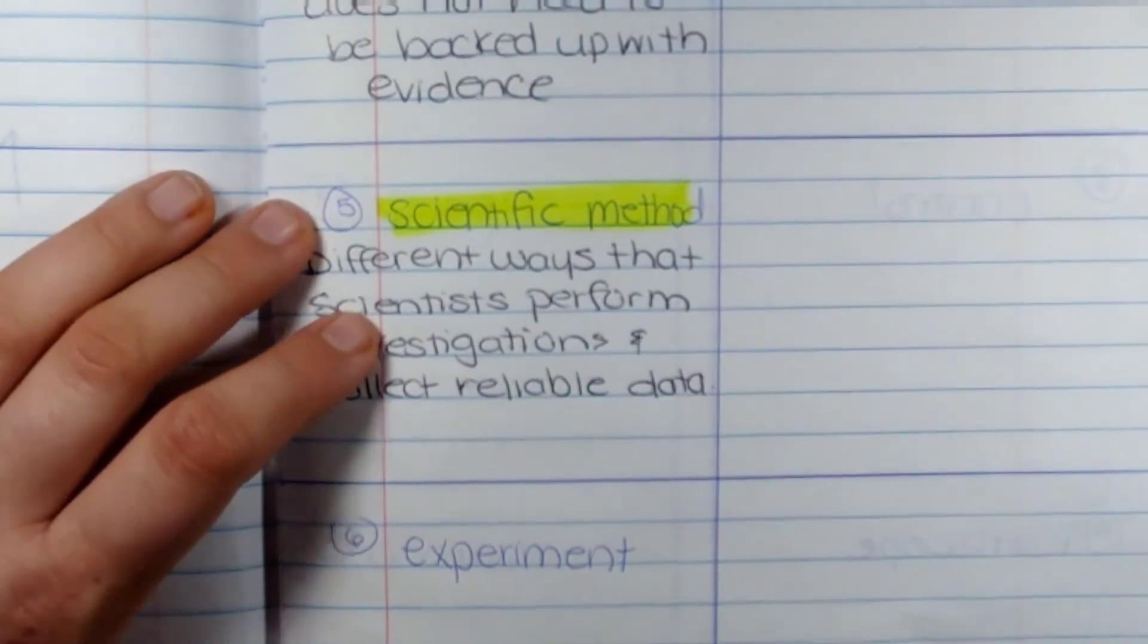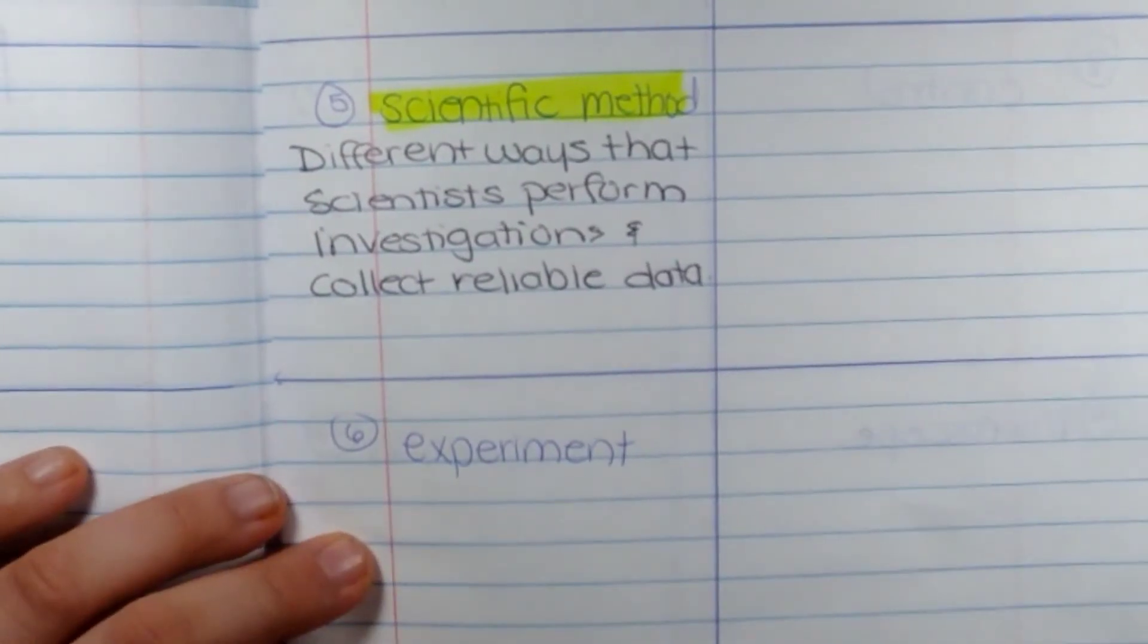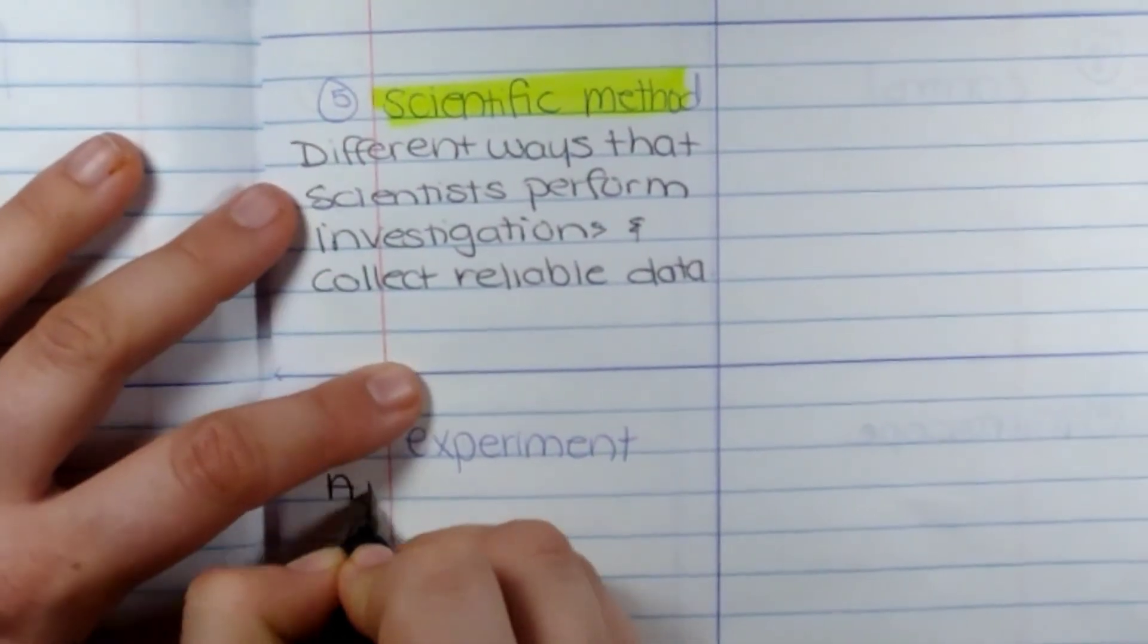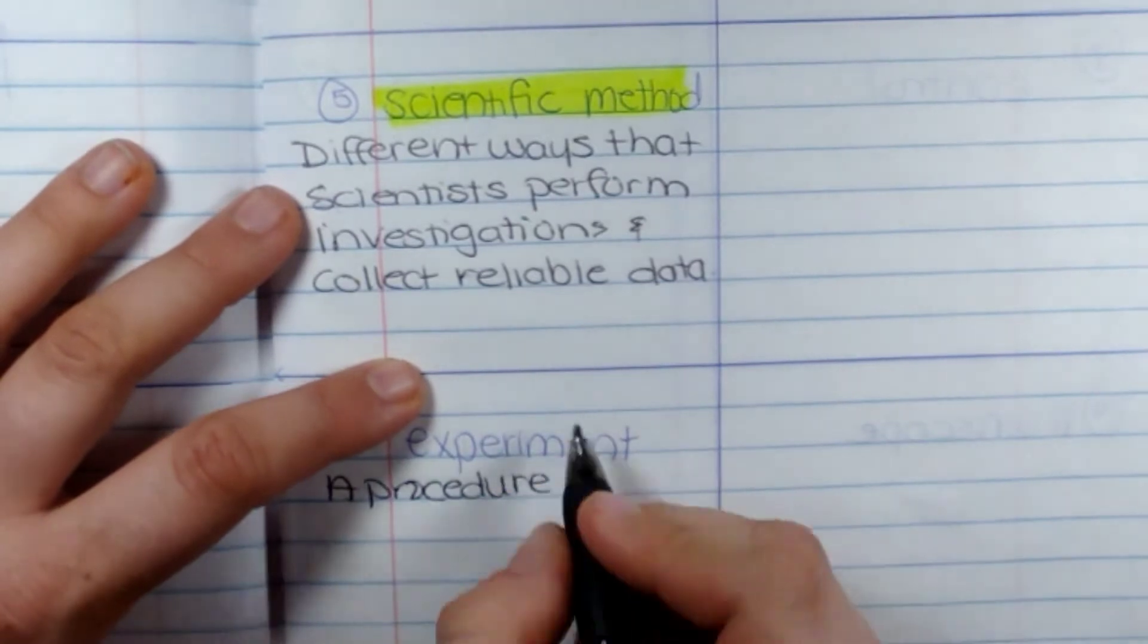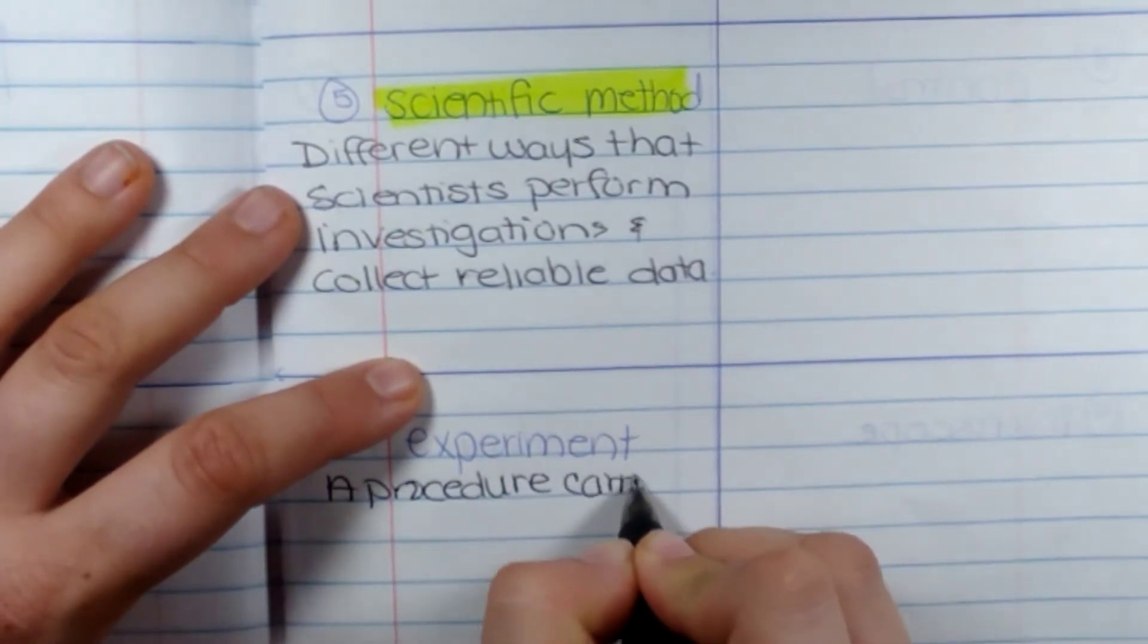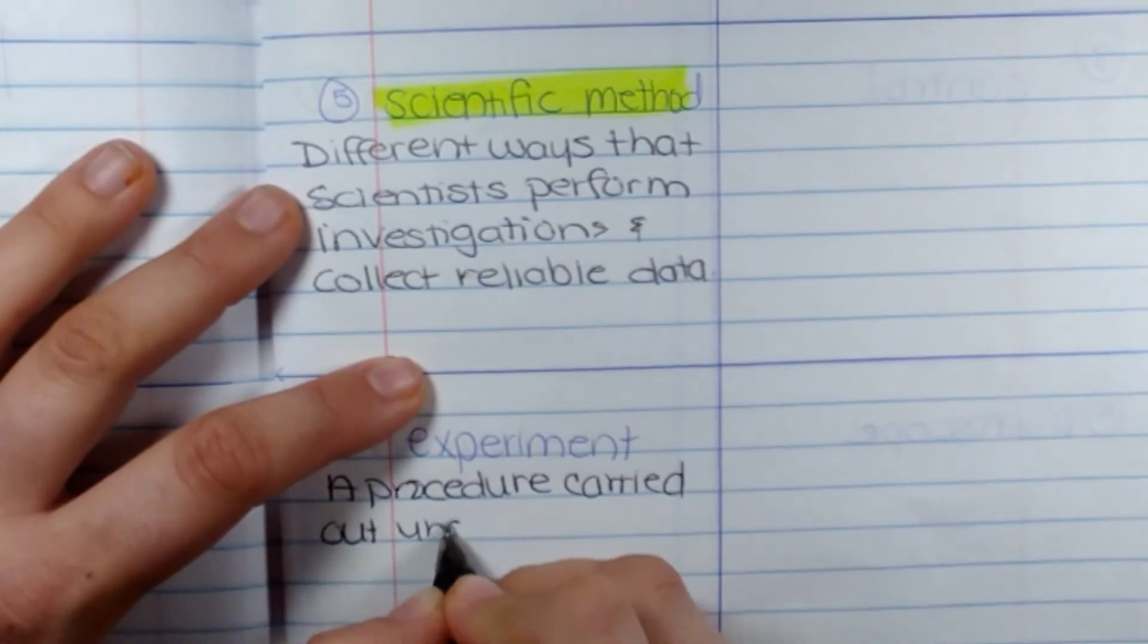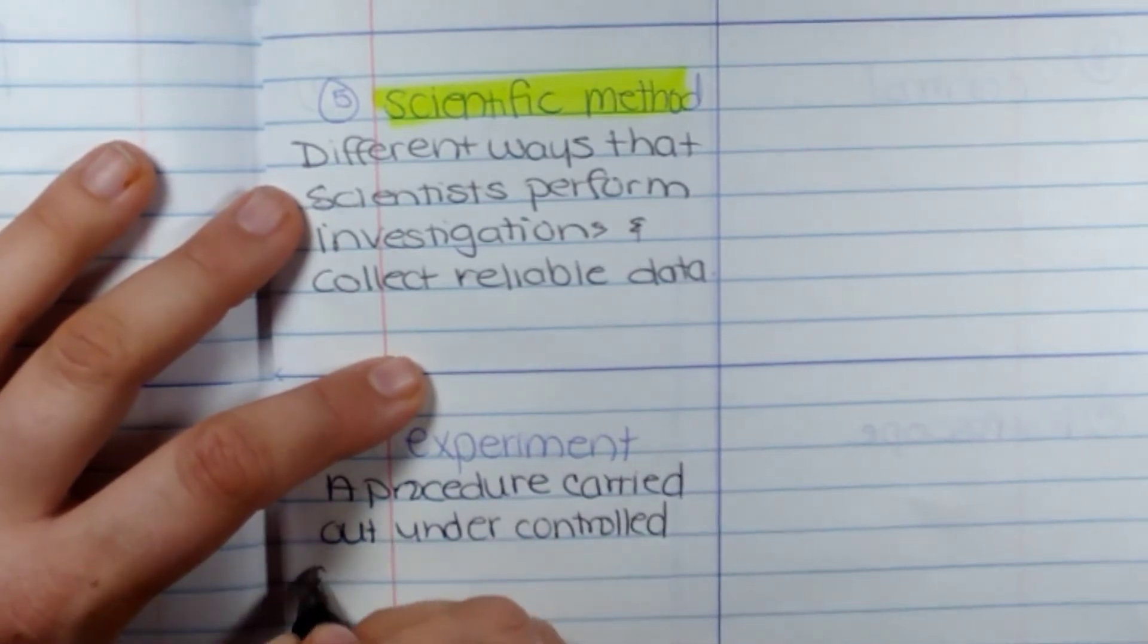The next word is experiment. A procedure carried out under controlled conditions to test a hypothesis. A procedure carried out under controlled conditions to test a hypothesis.